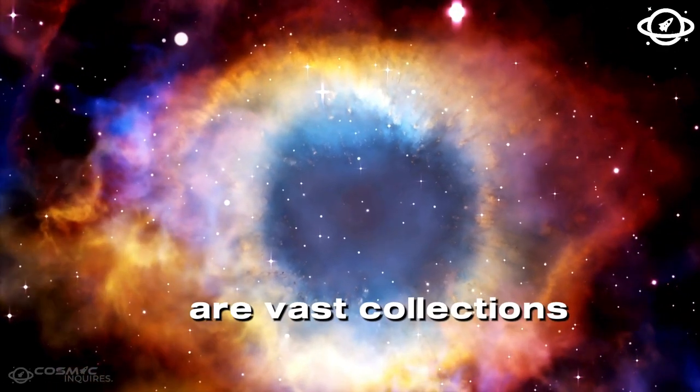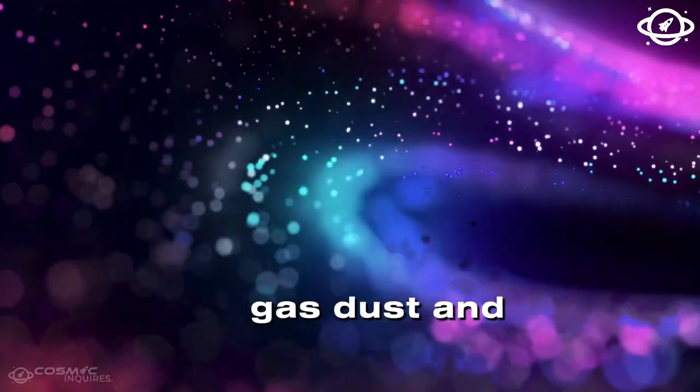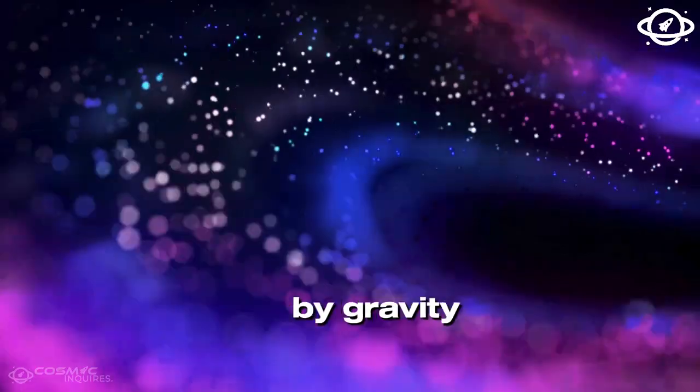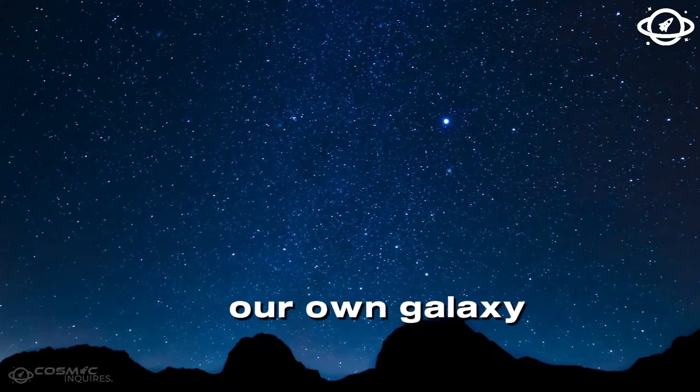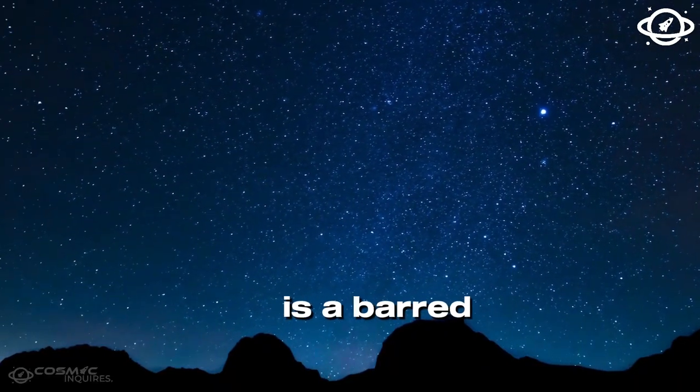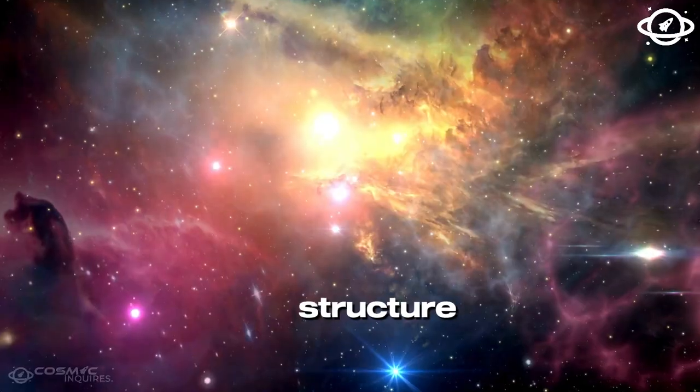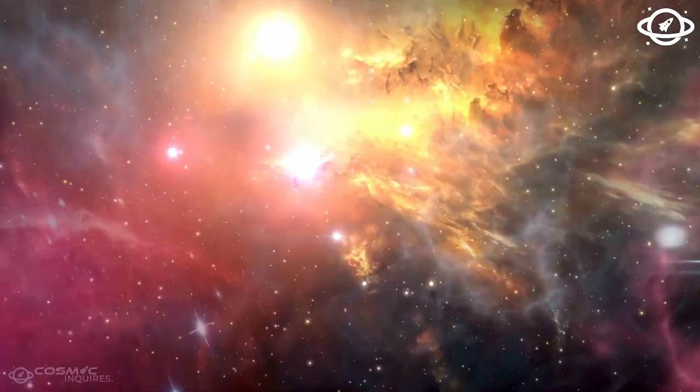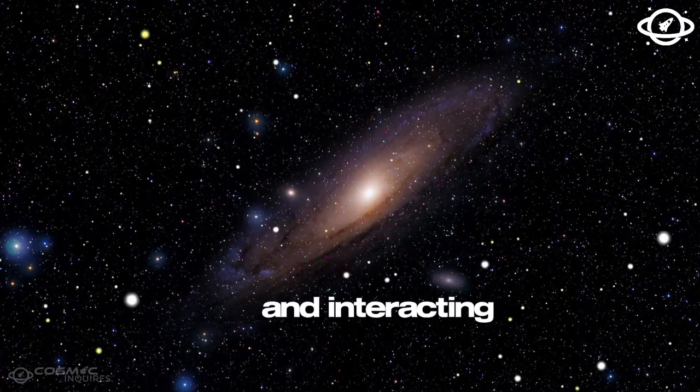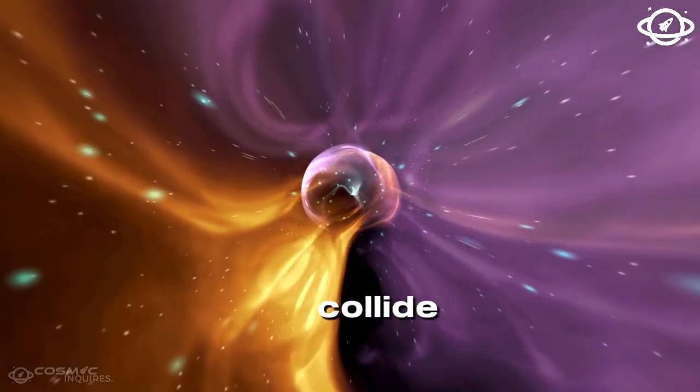Galaxies are vast collections of stars, gas, dust, and dark matter, all held together by gravity. Our own galaxy, the Milky Way, is a barred spiral galaxy, which means it has a central bar-shaped structure composed of stars. Galaxies are constantly moving and interacting with each other. Sometimes they even collide.